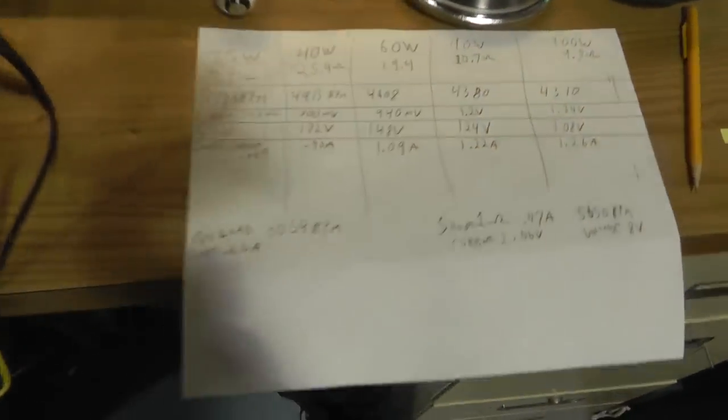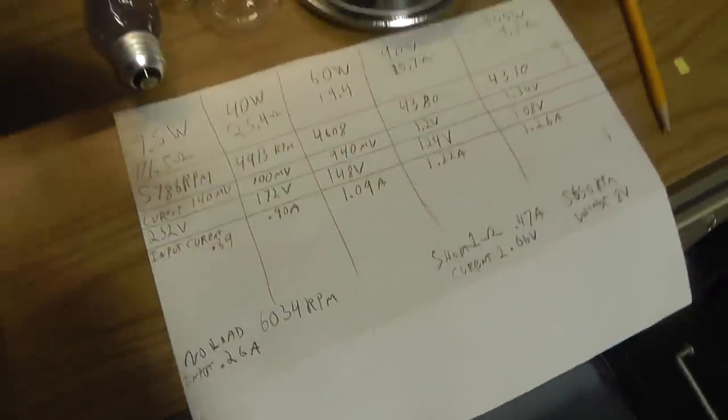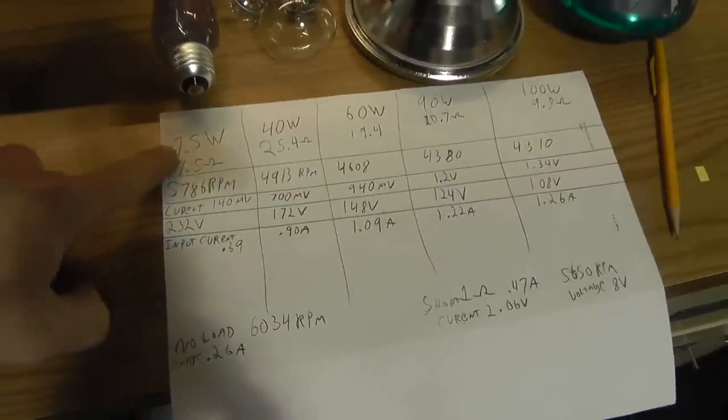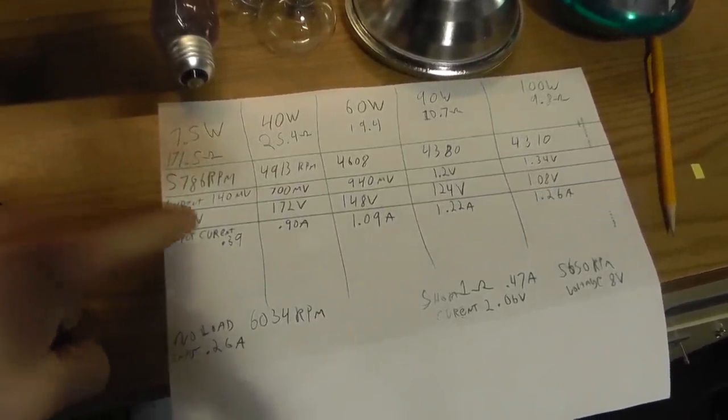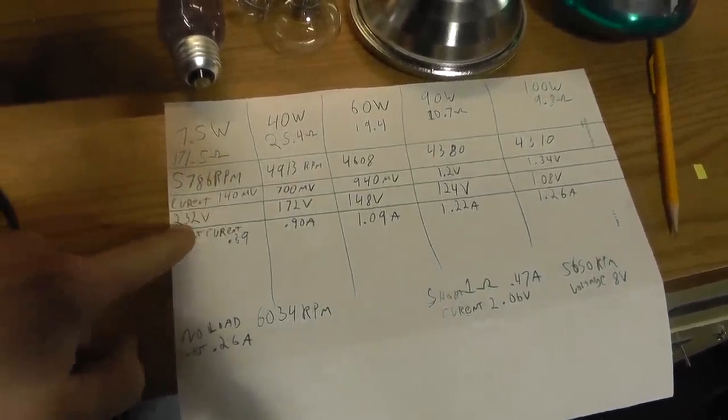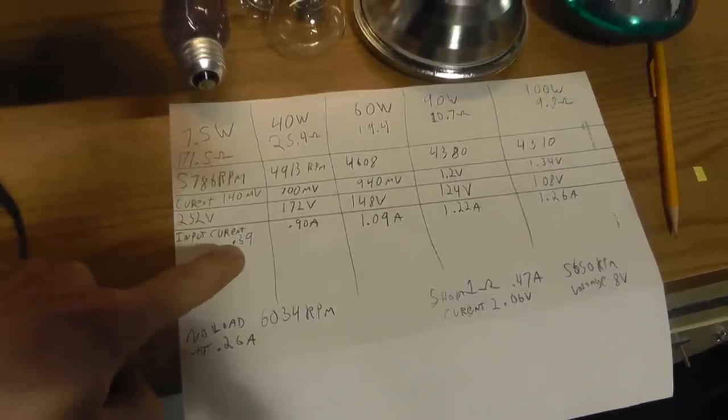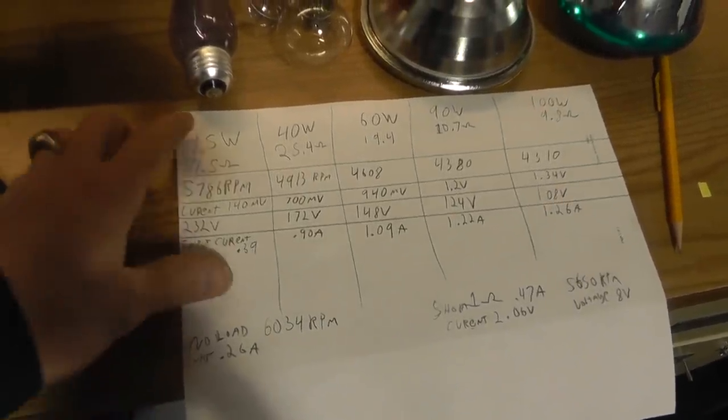Alright, I've completed the tests, and here is the official data. I need to get out of the light maybe. So our lower wattage is a higher resistance, the RPM is higher, the current is lower, the voltage is higher, the input current is lower. That is equal all the way across this board.